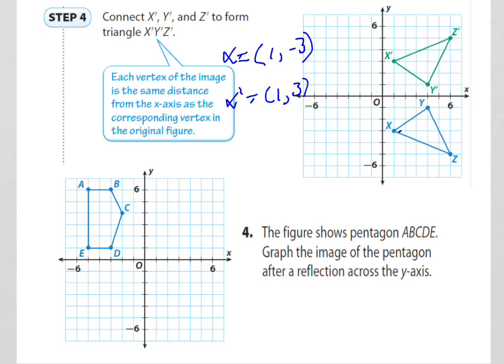What is Y? Y is (4, -1). Now again, you change the sign for y. So y-prime becomes (4, 1). And if you notice, that's exactly where it is.